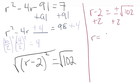And we get r equals 2 plus or minus square root of 102. And now if we can, we should try and break this down.